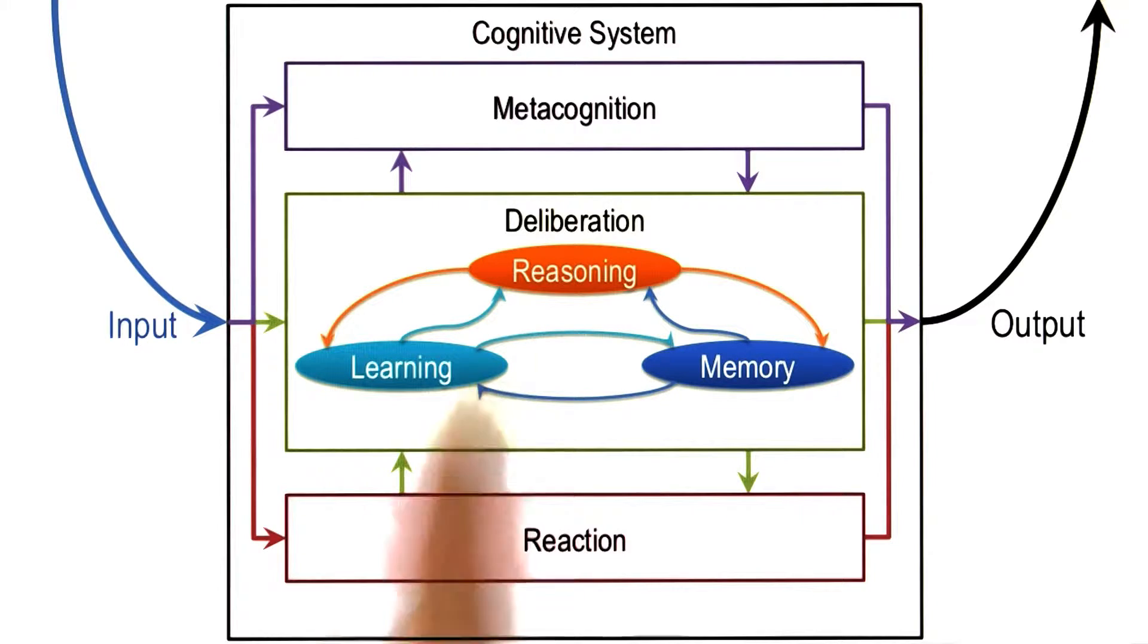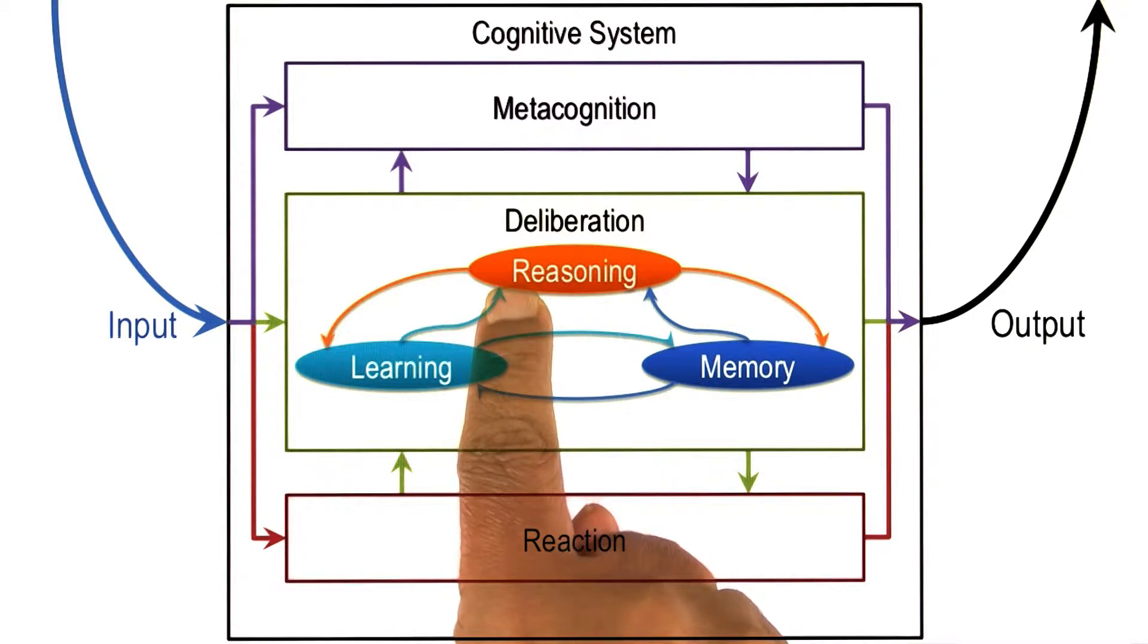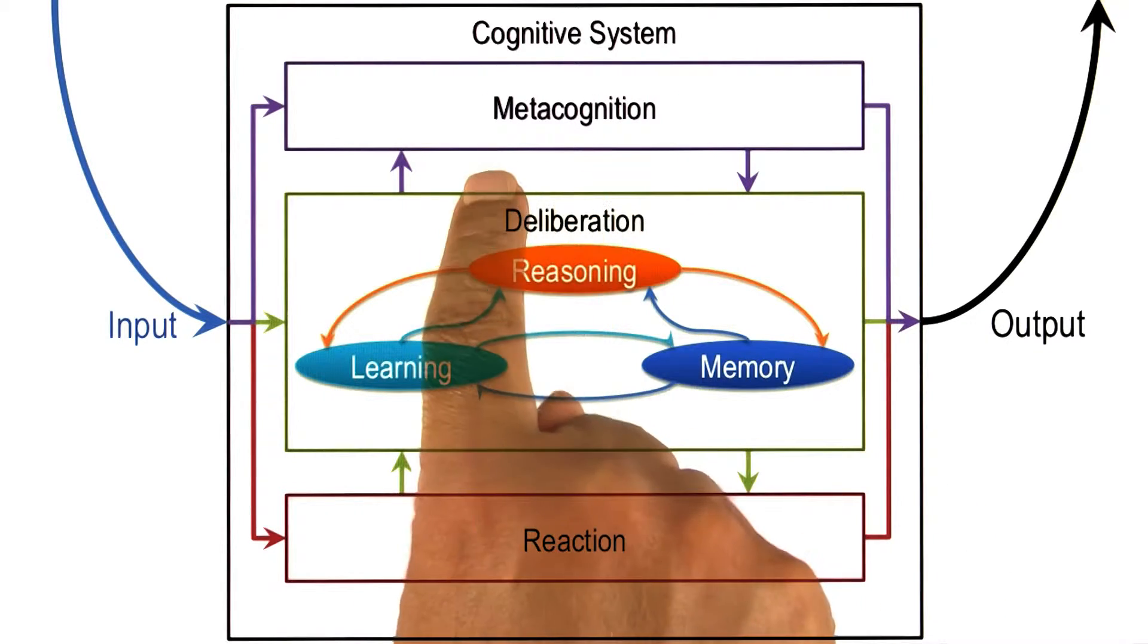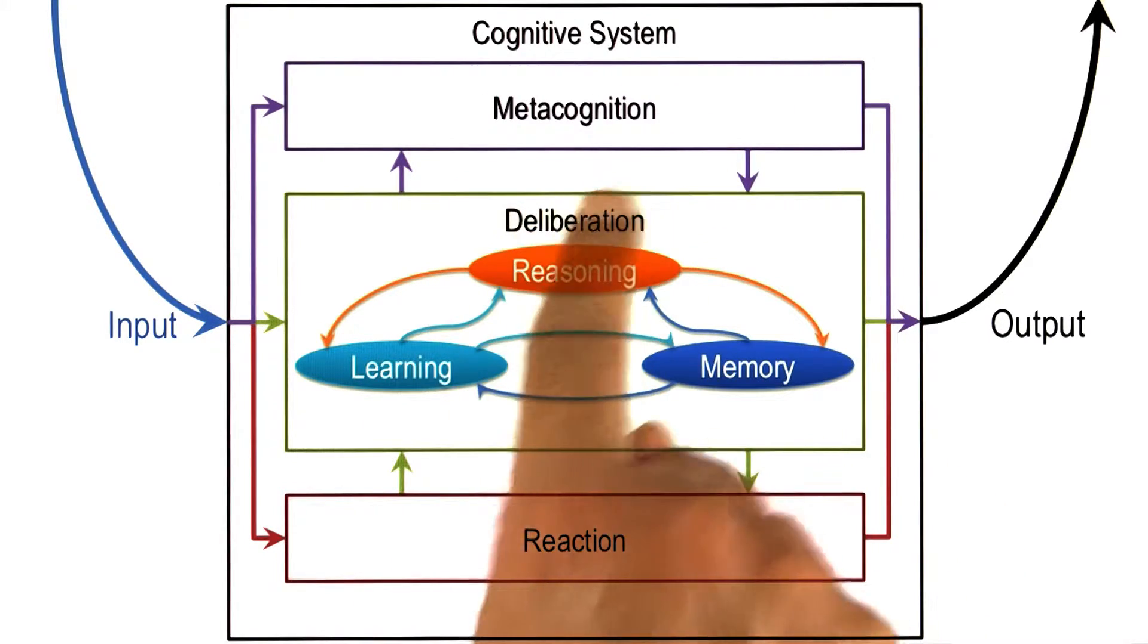In fact, there might be considerable overlap between metacognition and deliberation. Some processes in deliberation might be viewed as metacognitive processes. Some processes in metacognition might be viewed as deliberative processes.